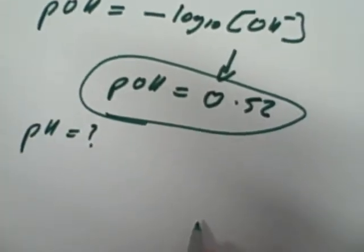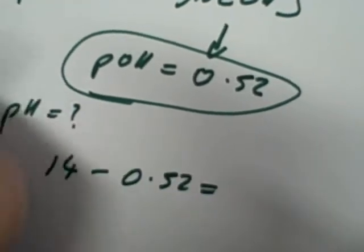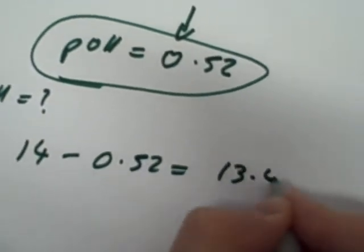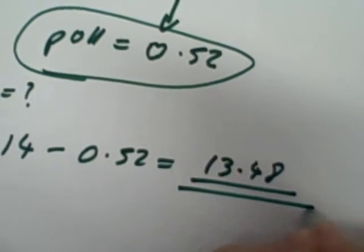So, what will the pH be? Remember, all things being equal, it's got to add up to 14. So, 14 minus 0.52 gives me, again, we can do this in our heads, but I'll do it on the calculator. 13.48. Easy.